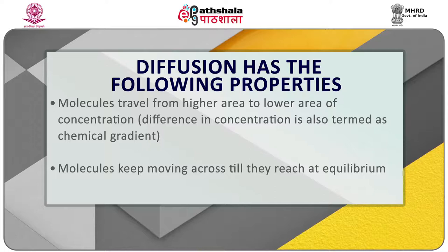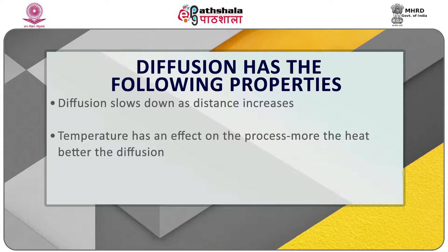Molecules keep moving across till they reach equilibrium. Diffusion slows down as distance increases. Temperature has an effect on the process — more heat means better diffusion. Some molecules dissolve in lipid mediums faster. According to Fick's law of diffusion, rate of diffusion equals surface area multiplied by concentration gradient multiplied by membrane permeability, divided by membrane thickness. The following figures explain this.